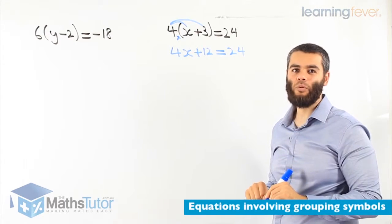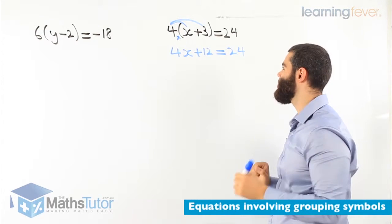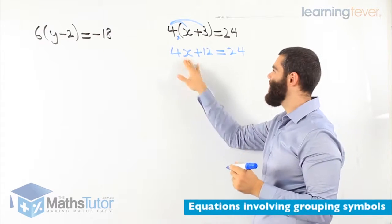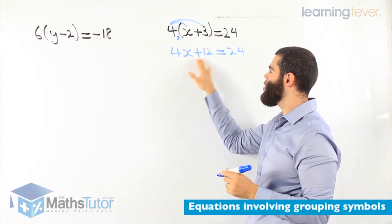We have our normal equation. Now, simple. What do we do? We have 4x plus 12 equals to 24. We want to work out x. We have to get rid of the 12, we have to get rid of the 4.